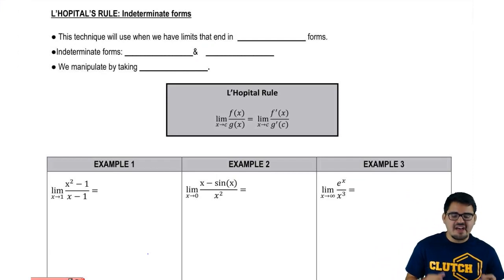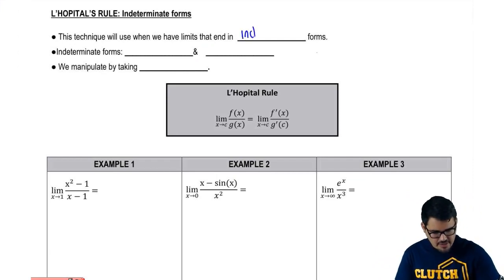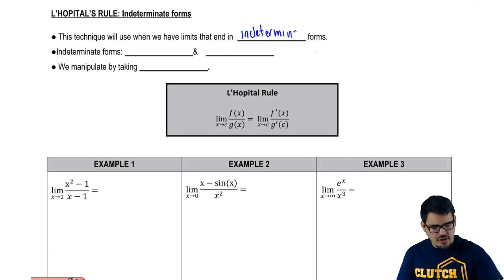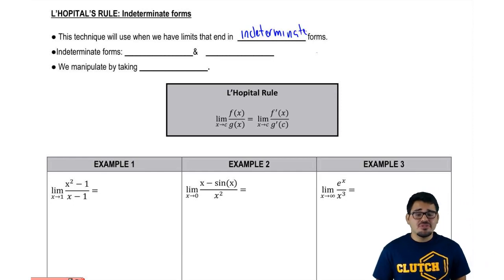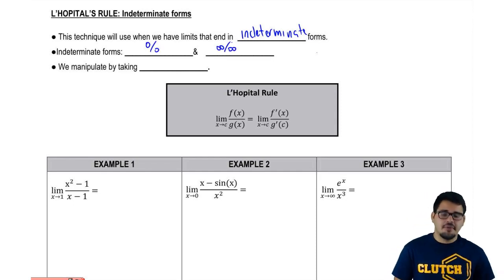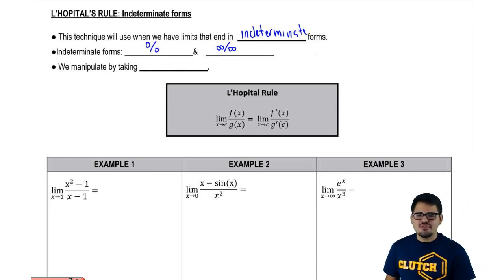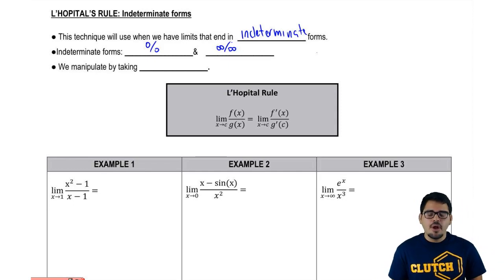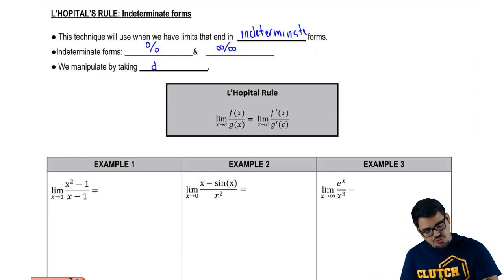This technique will be used when we have limits that end up in indeterminate forms. The types of indeterminate forms we're going to be dealing with in this video are 0 over 0 or infinity over infinity. Before, whenever we got 0 over 0, we had to do some conjugates, some factoring — all that stuff. But now we're going to go ahead and use derivatives. We're going to manipulate by just taking derivatives.